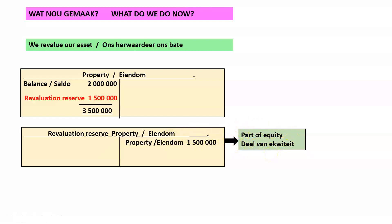Our next topic is going to be IAS 1, which covers the disclosure of certain items in the income statement and in the statement of financial position. You will see that we are going to disclose this 1.5 million in both the statement of changes in equity as well as in the statement of other comprehensive income, which forms part of the income statement. So the net impact is that our reserves or our equity figure is going to change by 1.5 million.